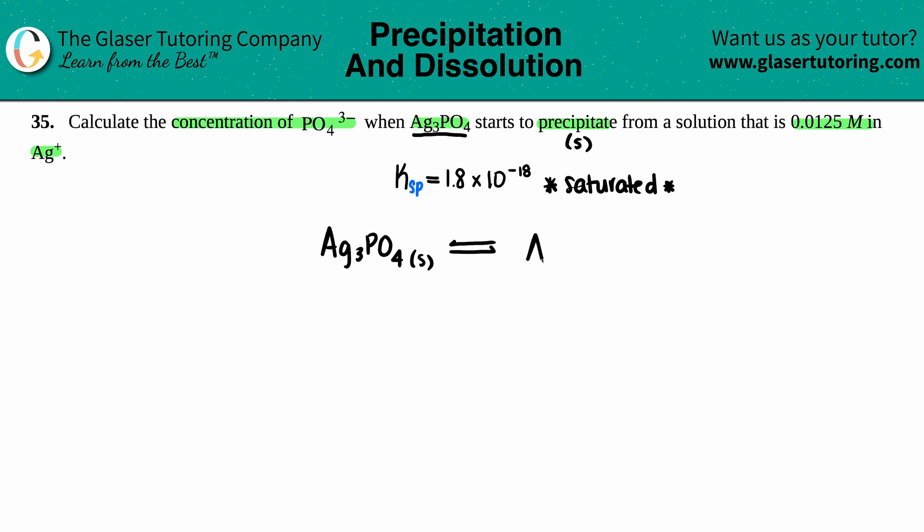They told me it was Ag⁺, so Ag⁺ that's aqueous because it's a charge, and then the phosphate ion PO4³⁻, that's also aqueous. Let's make sure this is balanced. I have three silvers so I do have to put a three in front of the Ag and now we are balanced.